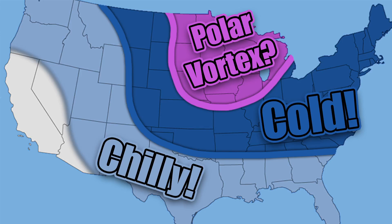Hello everybody. In today's video we're going to be going over an upcoming very cold pattern for much of the eastern, central, and even parts of the western United States. We're going to cover where that cold air might take place, how cold temperatures may be, and at the end of the video we'll look at when that drier period may let up and when we might get into a more active period of storminess.